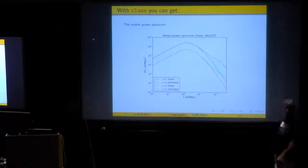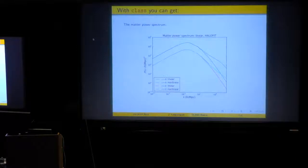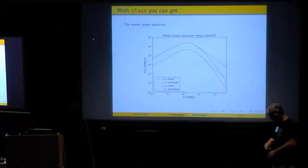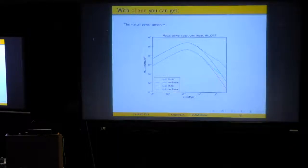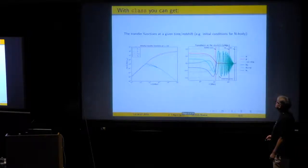If you are more a large-scale structure cosmologist, you can, of course, output the matter power spectrum. The linear one, because it's a primordial goal of such kind of a code. Or maybe some corrections coming from Halofit or HMcode or an algorithm like this. Okay, this is all very basic. Now, less basic things.